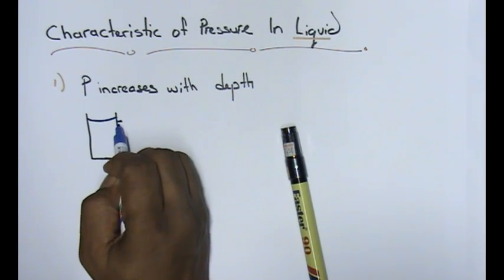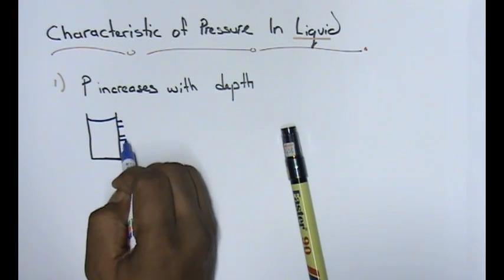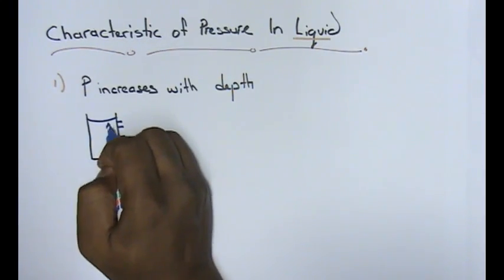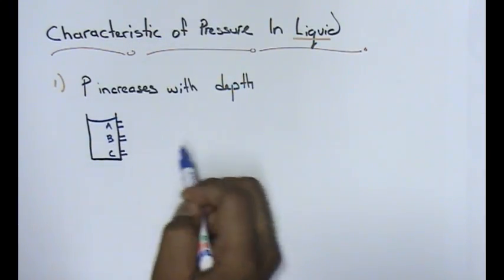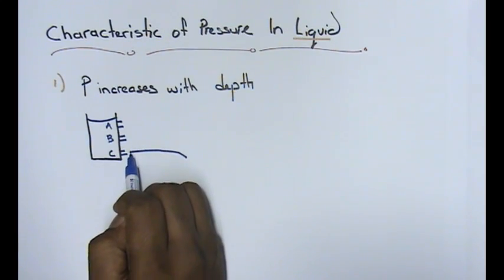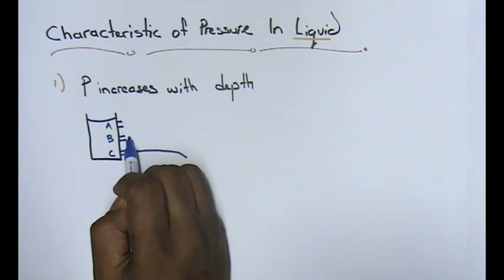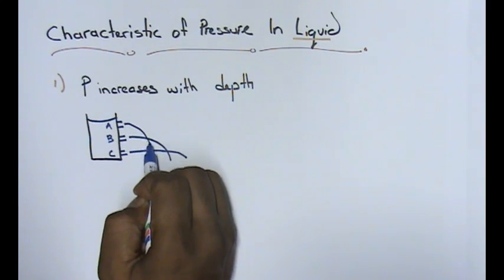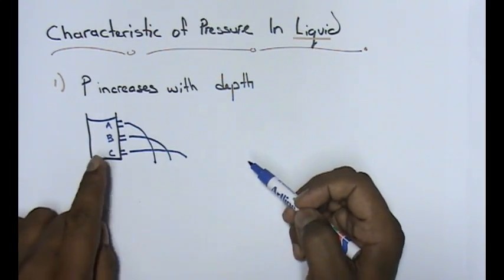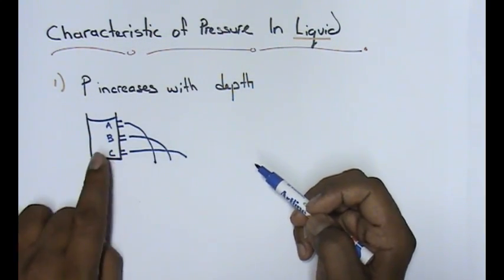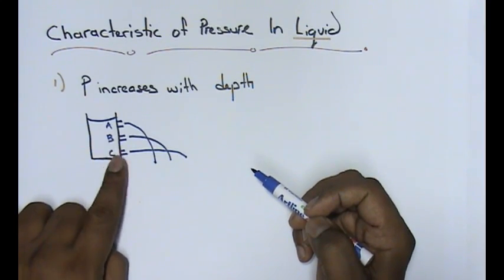Basically, this container has three holes. One, two, three. A, B, C. The water from the lowest hole will move the furthest, followed by the second hole, and then lastly by the third hole. The reason why water at hole C moves the furthest is because at C, the pressure of water is the highest.